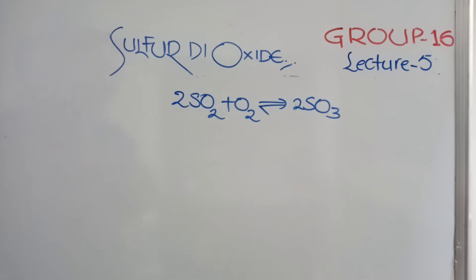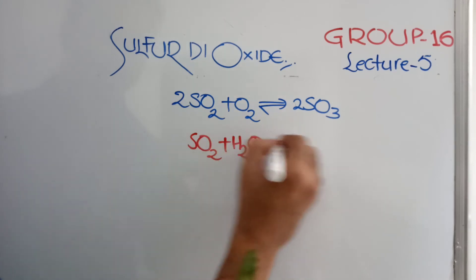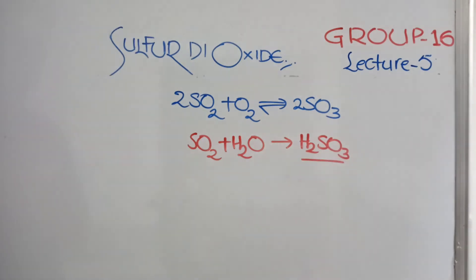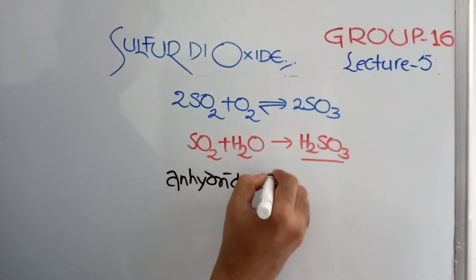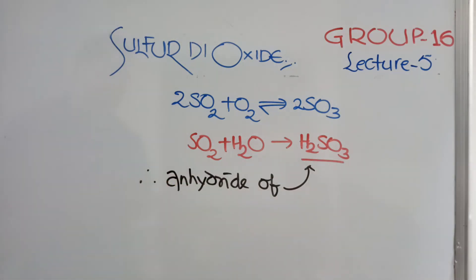The catalyst, you can use your platinum or vanadium pentoxides. Next one, when treated with water, SO2 plus water, it is going to form H2SO3. Sulfurous Acid. Sulfurous Acid as it is formed, you can say it is anhydride of H2SO3. Anhydride means one water short of that particular acid.